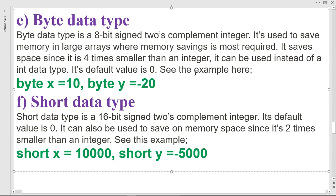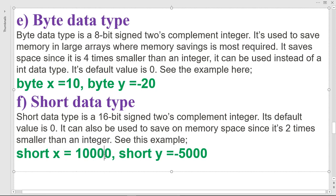The short data type is a 16-bit two's complement; its default value is zero. It can be used to save memory space since it is two times smaller than an integer — byte is four times smaller and short is two times smaller. So short can also be used instead of int when applicable.